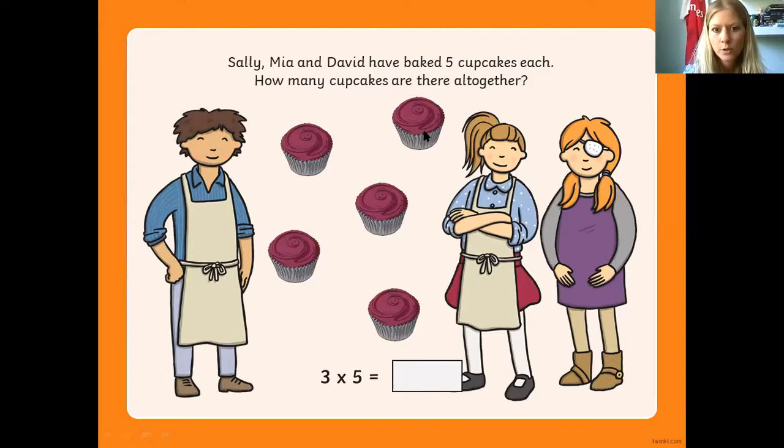So 1, 2, 3, 4, 5. Then again, 6, 7, 8, 9, 10. And again, 11, 12, 13, 14, 15. So we know 5 plus 5 plus 5 is 15. So if you want to do it easier, you could just say 3 for Sally, Mia, and David times 5 equals 15.